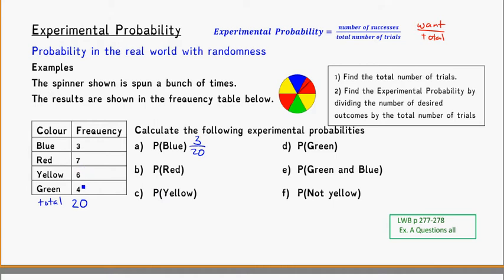The probability of it being a red was 7 times that it landed on red, so 7 out of 20. And the probability for yellow would be 6 out of 20, which simplifies to 3 out of 10.